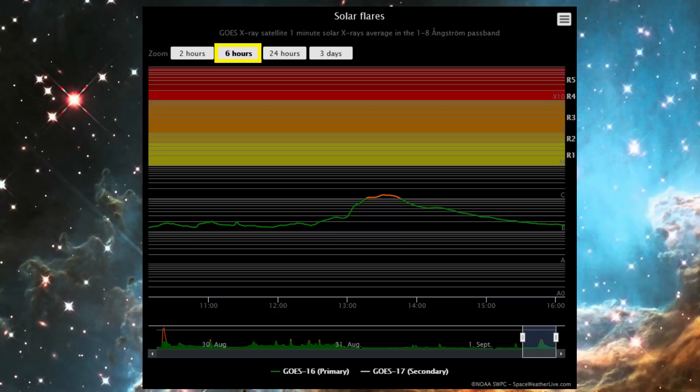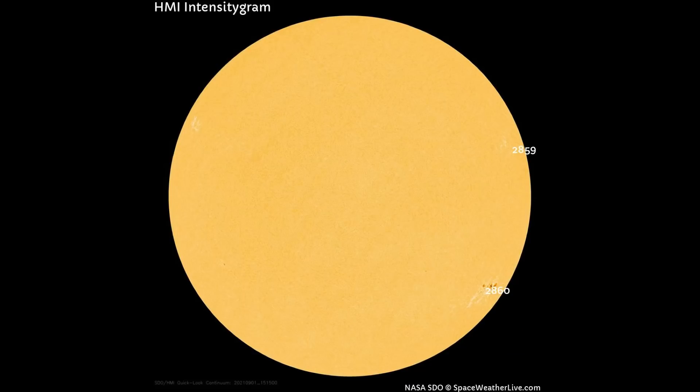Any C-class flare is indicated with the orange color. With this HMI intensity gram image of the earth-facing side of the sun, two sunspot regions can be seen: regions 2859 and 2860.